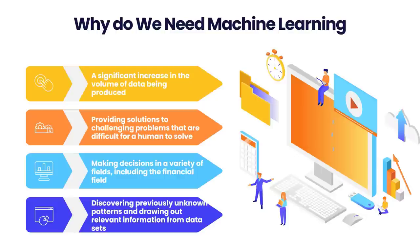We will be able to save both time and money with the assistance of machine learning. Machine learning is now being utilized in a variety of applications, including cyber-fraud detection, facial recognition, and friend suggestion by Facebook. Machine learning models have been built by leading organizations like Netflix and Amazon, which use a massive quantity of data to assess user interests and propose products accordingly. Major reasons machine learning is important include: significant increase in the volume of data being produced, providing solutions to challenging problems difficult for humans to solve, making decisions in fields including finance, and discovering previously unknown patterns from data sets.